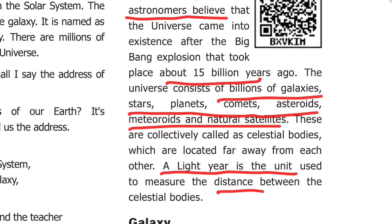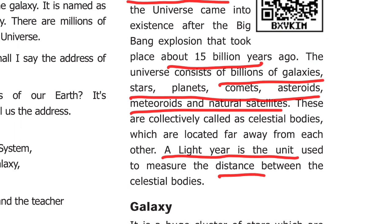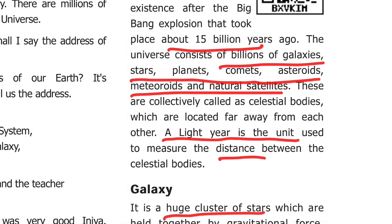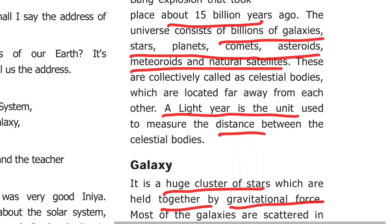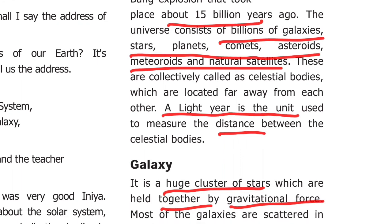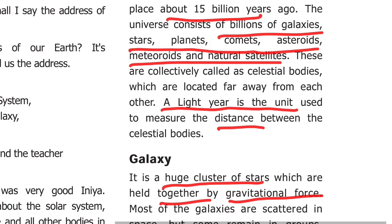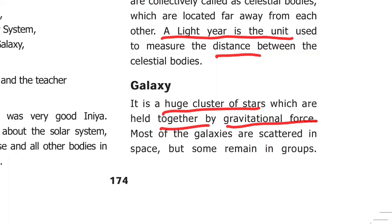The universe consists of billions of galaxies, stars, planets, comets, asteroids, and natural satellites. These are collectively called celestial bodies, which are located far away from each other. The unit used to measure the distance between celestial bodies is the light year. A galaxy is a huge cluster of stars held together by gravitational force.